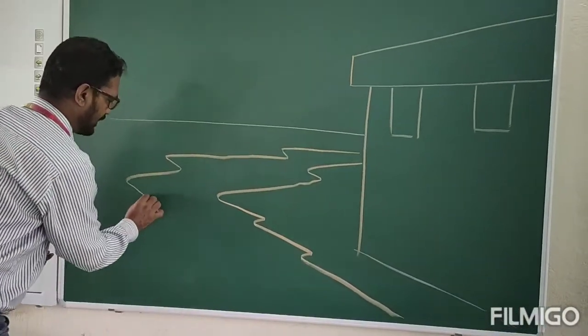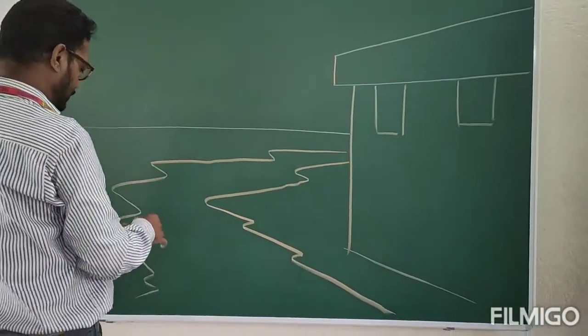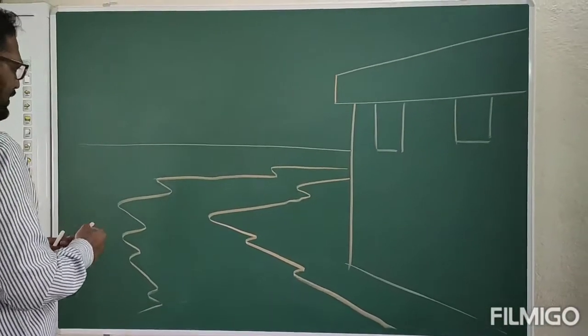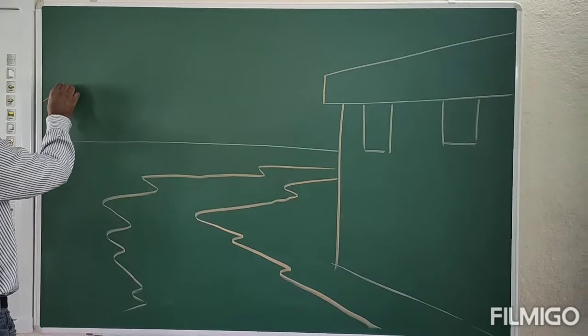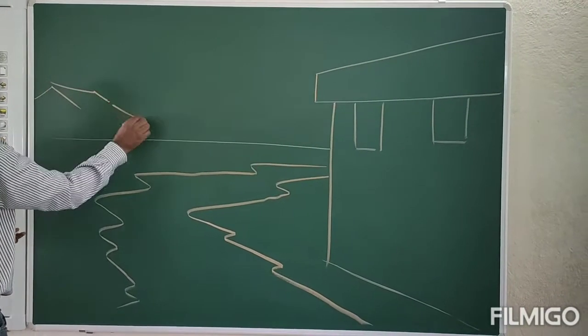And as it is coming through closer, it will spread more. Back side you can add more houses, suppose some catcher houses.